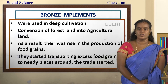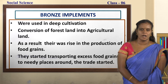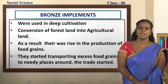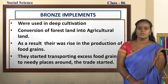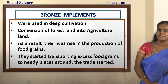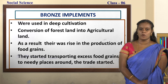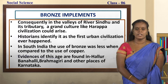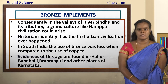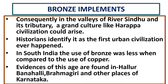Let us see what are the uses of bronze implements. These bronze implements were used in deep cultivation and conversion of forest land into agricultural land. As a result, there was a rise in the production of food grains. They started transporting excess food grains to needy places, and thus trade — the buying and selling of goods — started. Consequently, in the valleys of the river Sindhu and its tributaries, a grand culture like the Harappan civilization arose. Historians identify it as the first urban civilization. In South India, the use of bronze was less compared to copper. Evidences of this age are found in Hallur, Banahalli, Brahmagiri, and other places of Karnataka.